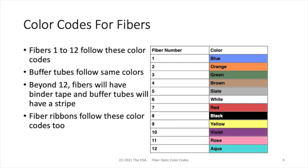Beyond 12 fibers or 12 buffer tubes, we have to have some way to identify higher numbers. Fibers will typically be bundled in 12s with binder tape that will be color coded. And buffer tubes will have a stripe that indicates 1 through 12, 13 through 24, 25 through 36, and so forth. Ribbon cables use the same color codes. So if you have a 12 fiber ribbon, it will follow these color codes. There are some 24 fiber ribbons, and they will simply duplicate the 12 colors again.